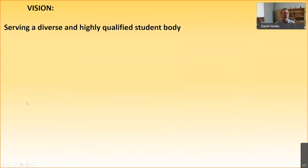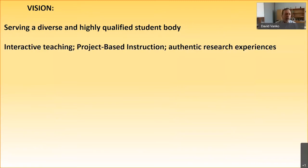Let's look at the vision that we put together for designing this building. The first part of our vision is our students — we serve a diverse and highly qualified student body, and we wanted to provide the best possible facilities for student learning in the sciences. The best possible facilities involve spaces that promote interactive teaching, project-based instruction, hands-on research, and authentic research experiences. You'll see spaces designed to accommodate all of these things.